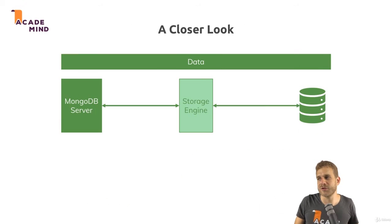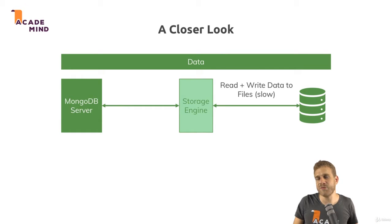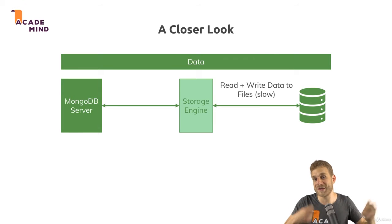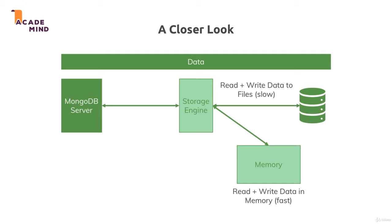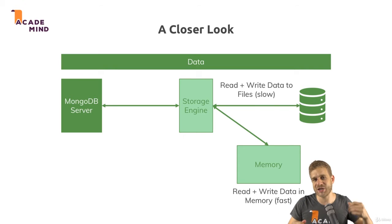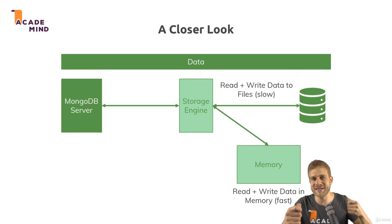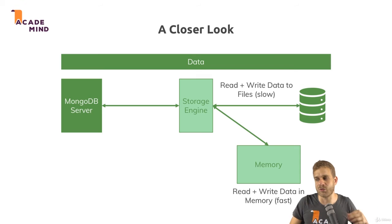If we have a closer look at the data layer — with the server, the storage engine, and the file system — we have to differentiate between writing and reading from files, which is a bit slower, and writing and reading from memory, which is faster. The storage engine actually does both: it loads a chunk of data into memory and manages it such that the data you often use is in memory if possible. It also writes data in memory at first so that this is really fast, but then goes ahead and stores data in the database files.